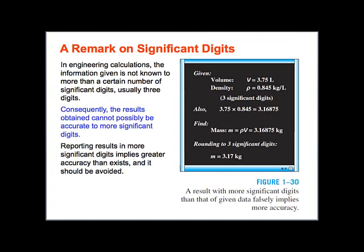Just a remark on significant digits now. A typical thing that I find is that students tend to list their answer, for example here in figure 130, we see the student has listed the answer as 3.16875, which is five points after the decimal place.